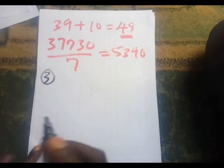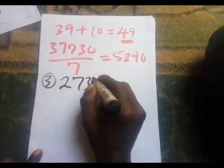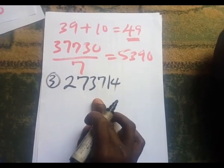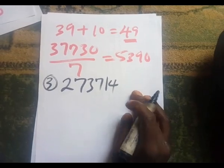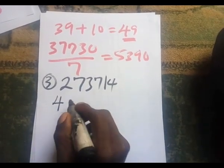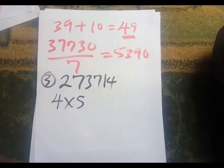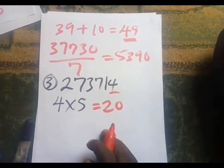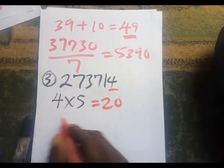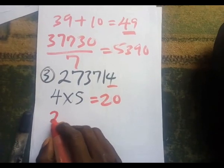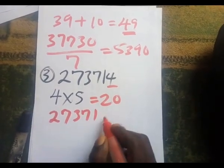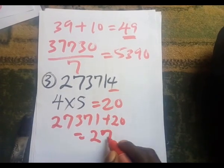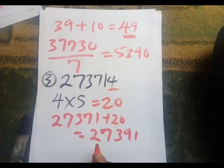The third example is 273,714. Is this divisible by seven? The last digit is four. Multiply four by five to get twenty. Add twenty to the remaining digits 27,371, which gives 27,391.